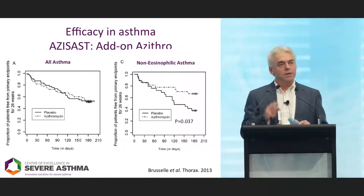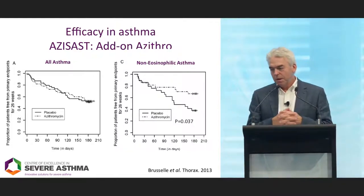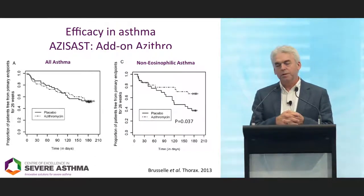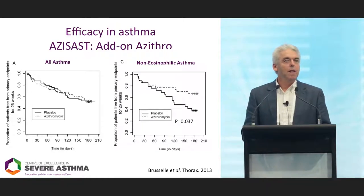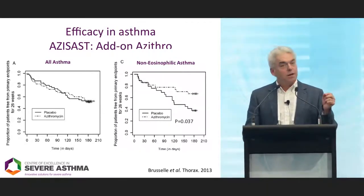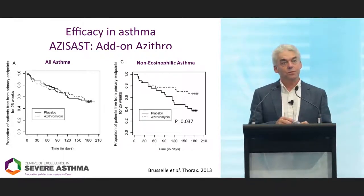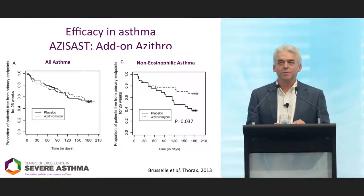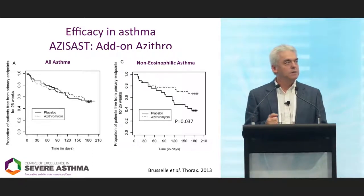What about asthma? Two studies have looked at exacerbations with macrolides in asthma, both using azithromycin. The Azizar study from Belgium enrolled patients with moderate to severe asthma on ICS/LABA, frequent exacerbations in the previous year, and episodes of infective bronchitis. They tried to identify a non-eosinophilic group using low FeNO. The primary outcome was negative — no effect in the total group. But when broken down by blood eosinophil count of 0.2 or 200 cells, they saw a benefit of azithromycin reducing exacerbations in non-eosinophilic asthma.